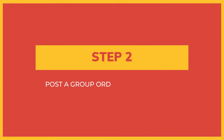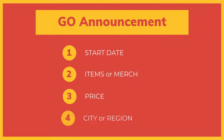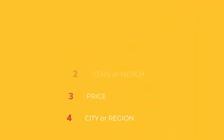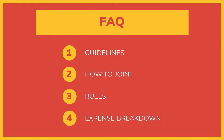Step 2: Post a group order announcement. Include the start date, the item you'll be ordering, price, and what city or region is included in the group. You should also prepare an FAQ post for more details like the guidelines on how to join, rules, and the breakdown of all expenses.